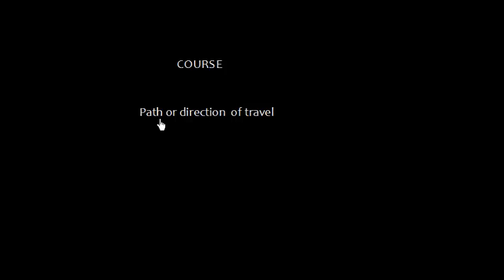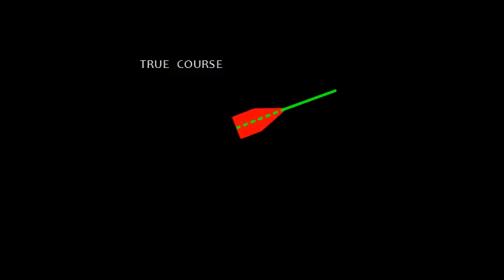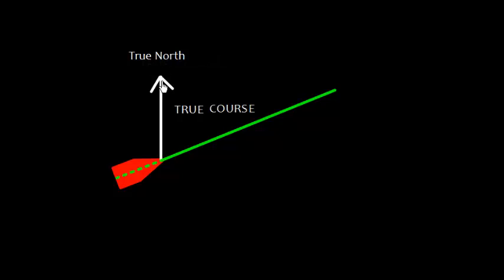The course of the ship is a path or direction of travel. Now let's talk about true course. Suppose this is the vessel and this is the direction the ship is going to travel. If this is true north, then this angle is called true course — defined as the angle made at the ship from true north to the fore and aft line, or ship's heading, measured clockwise from zero to 360 degrees.